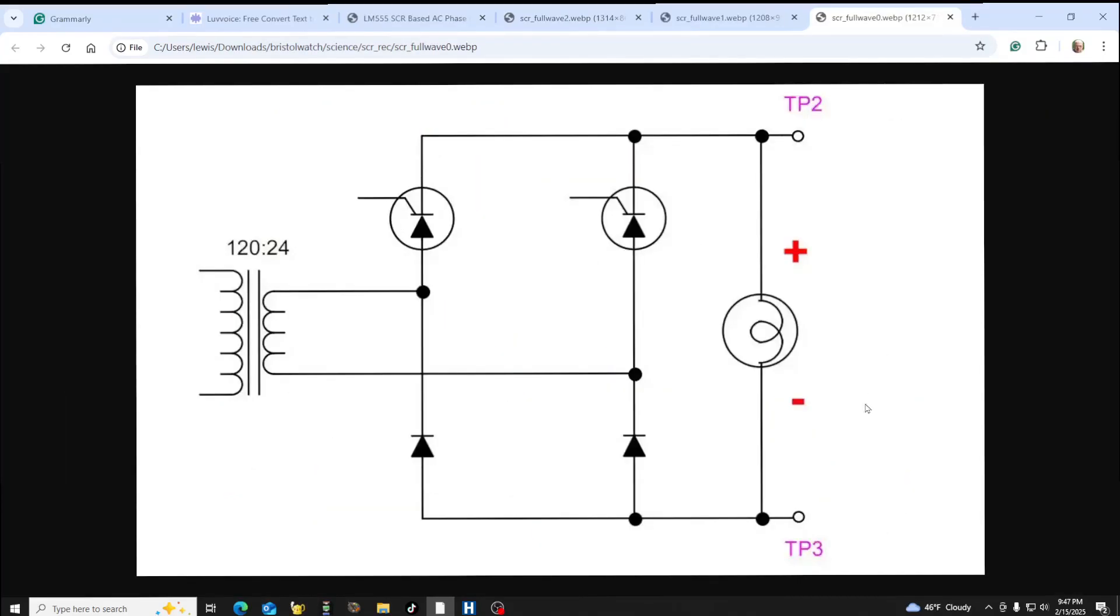All right, this is basically a basic representation of a full wave diode bridge. But up here you notice I replaced two of the diodes on the positive going side of the circuit with SCRs. By tripping on and controlling these two SCRs, I can control the output to test point two. So let's add some gate circuitry to these SCRs and see what we get.